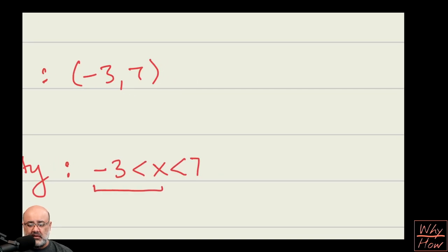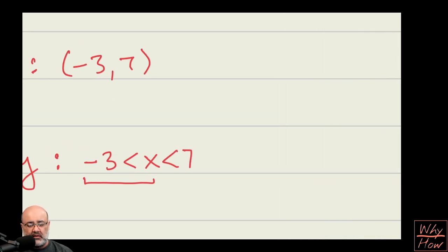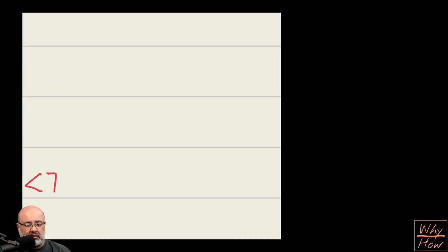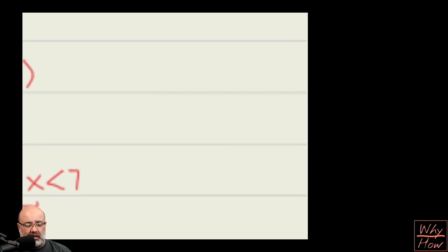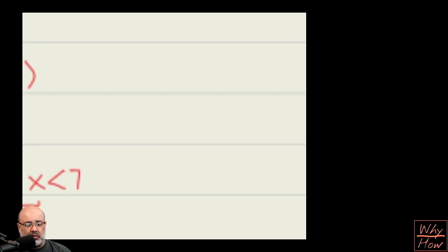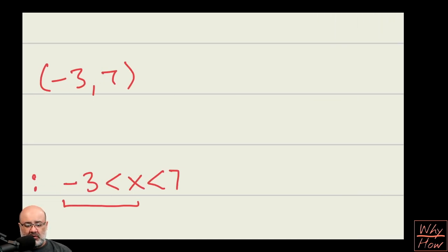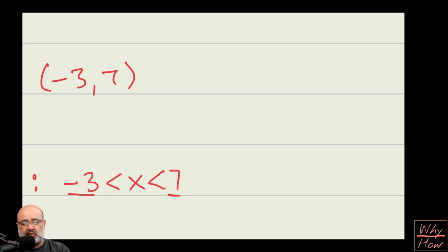So the question then becomes, how do you pick numbers between? Well, you put x in the middle, and you say x is greater than negative 3, but it is less than 7. So x is sandwiched between those two numbers.